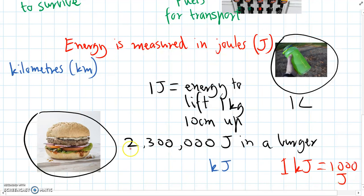So if we want to simplify this number here, two million three hundred thousand, we know that there are a thousand joules for every kilojoule. So we divide by a thousand, there must be two thousand three hundred kilojoules of energy in that burger.